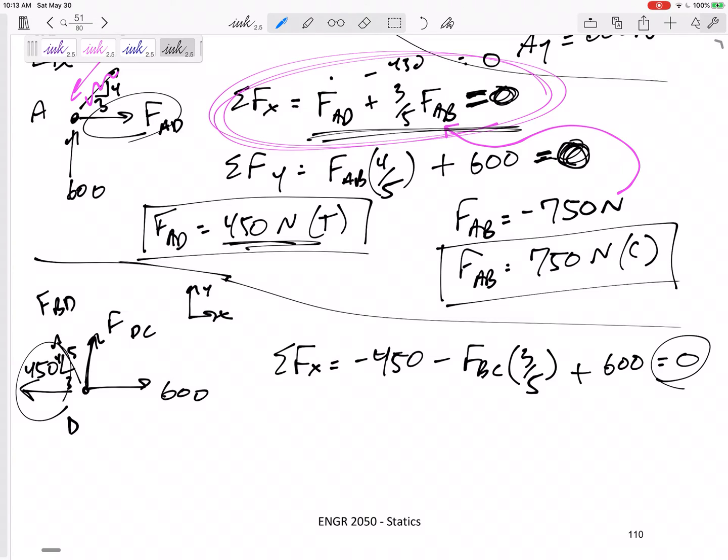That only has one unknown, so I think I can solve for FBD. FBD would come out to be positive 250. Positive means I guessed correctly. So it is 250 in tension.